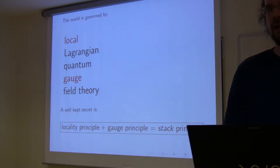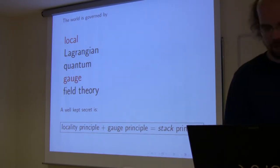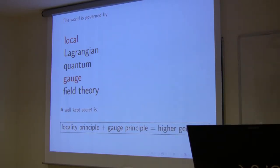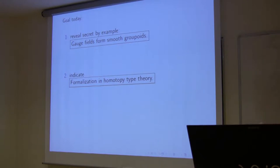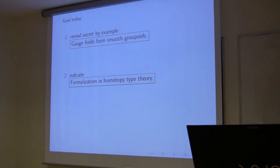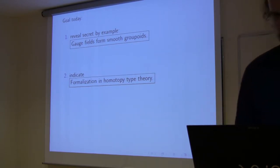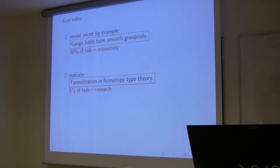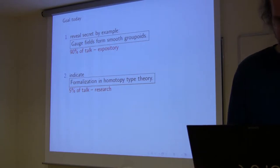Stack is a historically grown term that, like most mathematical terms, is entirely unsuggestive of what it actually denotes. A different way of saying it is that this is the concept of higher geometry, where higher means homotopic. The goal of today is to reveal that well-kept secret by example. I will demonstrate how gauge fields form smooth groupoids — namely smooth stacks. At the very end I'll indicate that the formalization of this is homotopy type theory and cohesive homotopy type theory, which David Caulfield will discuss further. About 90% of my talk is exposing this point of view that homotopical geometry has been present for a long time already.